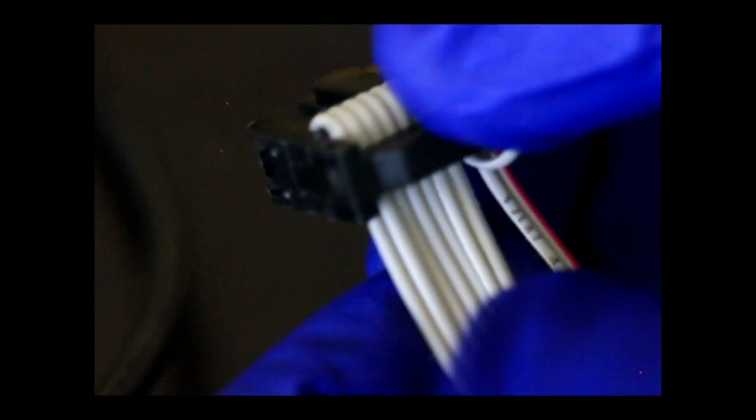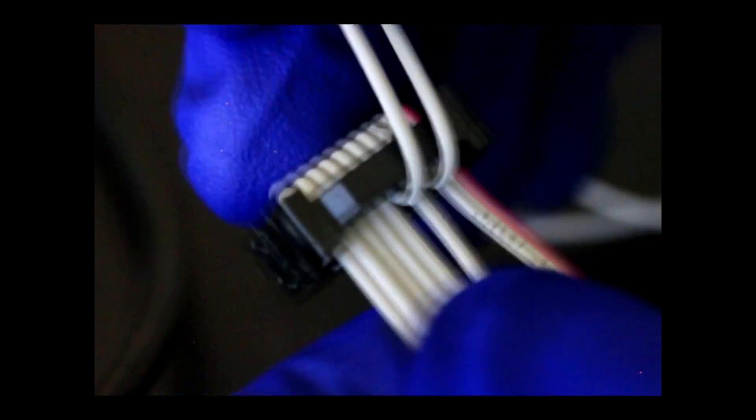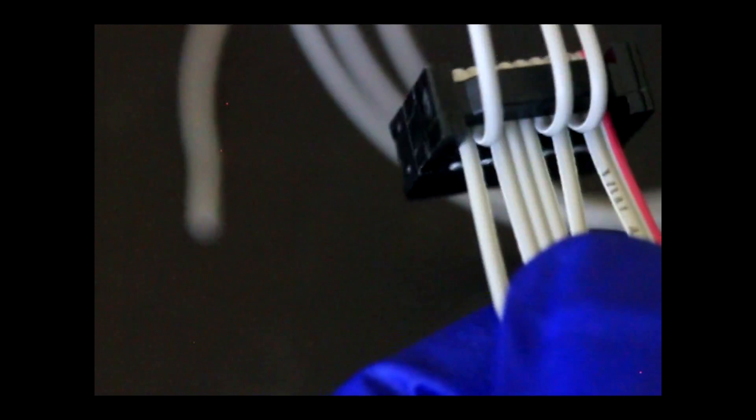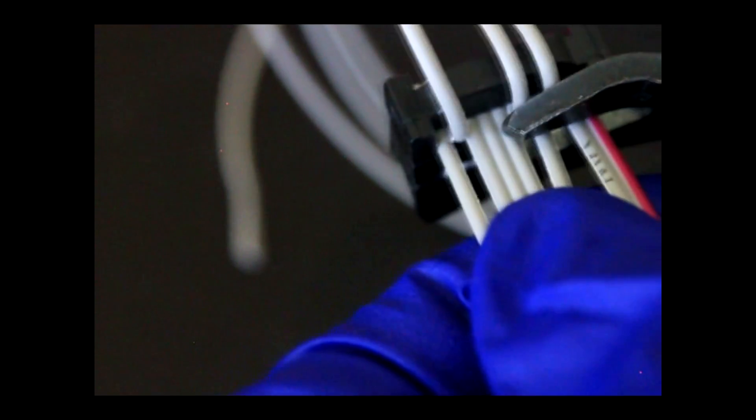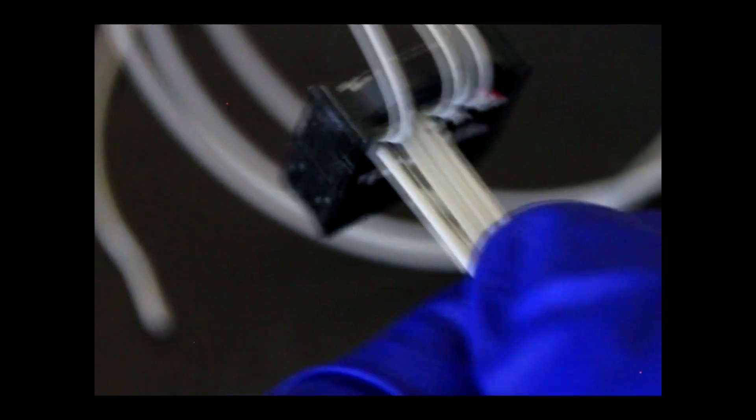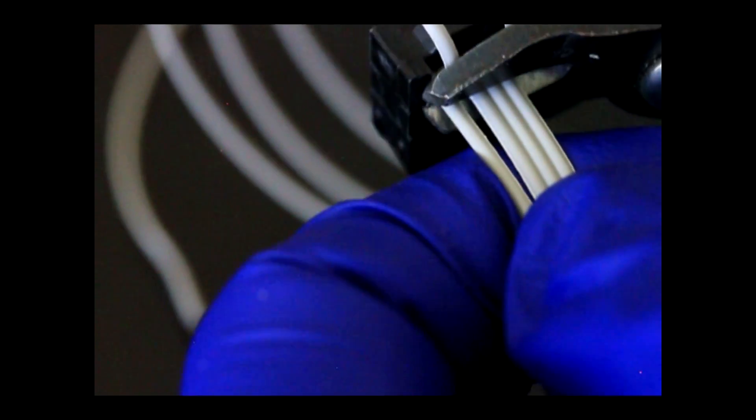Before I cut the unnecessary wires, I want to move the wires that I want to keep out of the way so they don't get cut. Now with some standard wire cutters, I'm just going to cut off the unnecessary wires as close to the connector as possible. This is what the finished connector should look like. There should be only three wires extending from the connector.